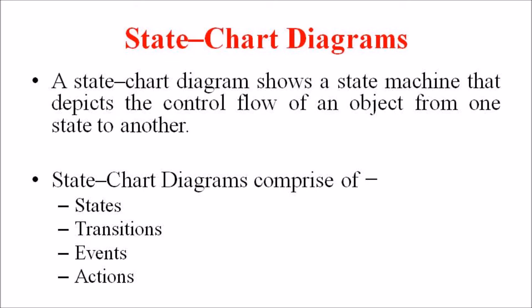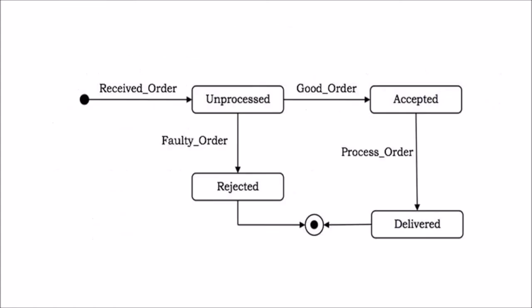State Chart Diagrams are used for modeling objects which are reactive in nature. For example, in the Automated Trading House System, let us model the order as an object and trace its sequence. The figure shows the corresponding state diagram. We are receiving an order, processing it. After processing, we have accepted it. Finally we delivered and go to the final state. During the process, if we are not ready to accept that order, we can also reject the order and go to the final state.